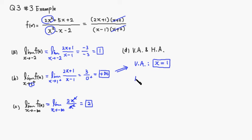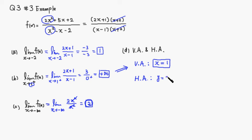To find a horizontal asymptote, we look at the limit at infinity. When you have a rational function like this one, you have at most one horizontal asymptote. In this case, the limit of the function as x approaches negative infinity equals 2. Therefore, y equals 2 is the horizontal asymptote of the given function. That's it — I hope that was clear.